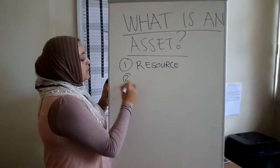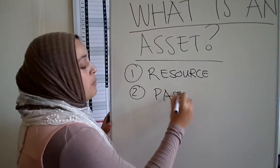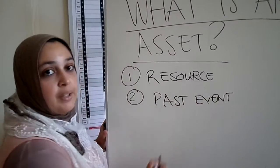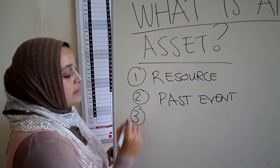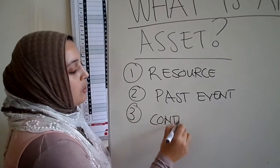The second one is, is there a past event? So what was the past event? The third part is, is it controlled by the business? So there needs to be control.